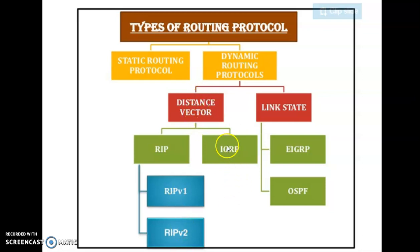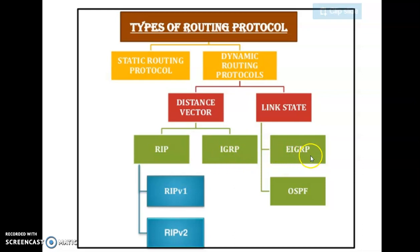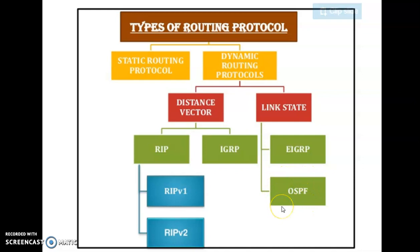In distance vector routing protocol there is also IGRP and EIGRP. IGRP stands for Interior Gateway Routing Protocol, whereas EIGRP stands for Enhanced Interior Gateway Routing Protocol. The important protocol for link state routing is OSPF, where OSPF stands for Open Shortest Path First protocol. In today's scenario, OSPF is a well-known and widely used protocol in networking.